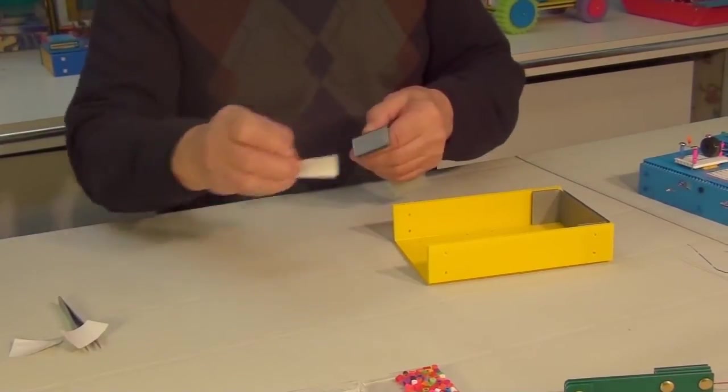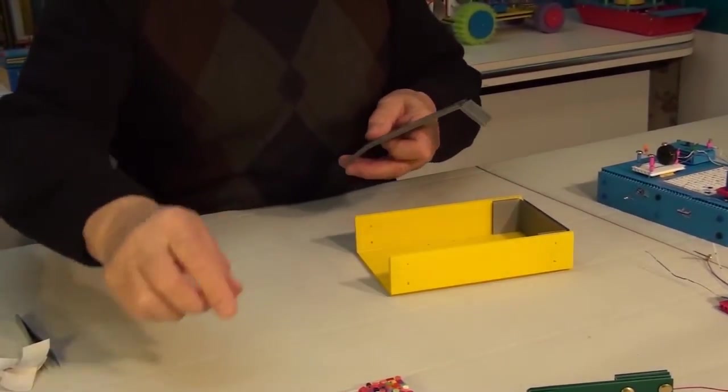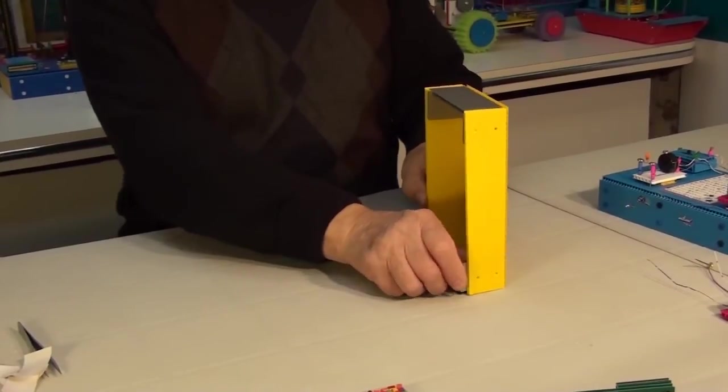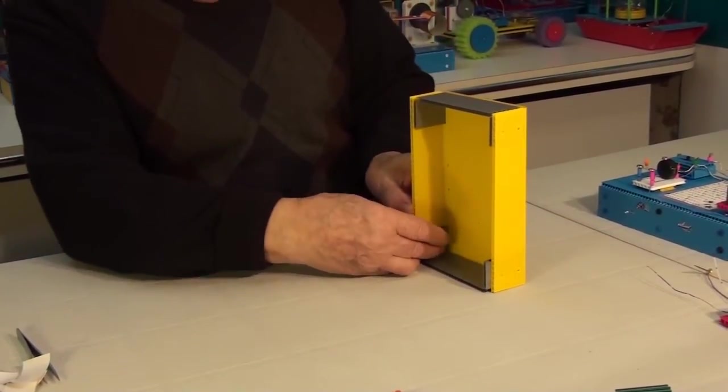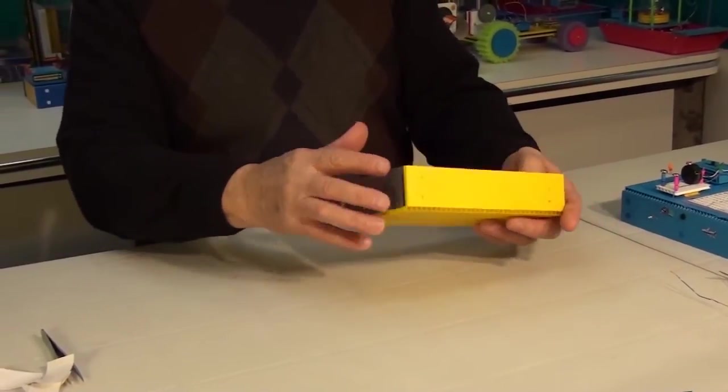We will repeat the same on this side of the box. Again, remove the adhesive backing and place the box vertically in order to insert the side of the box at a right angle. Check if the sides are straight.